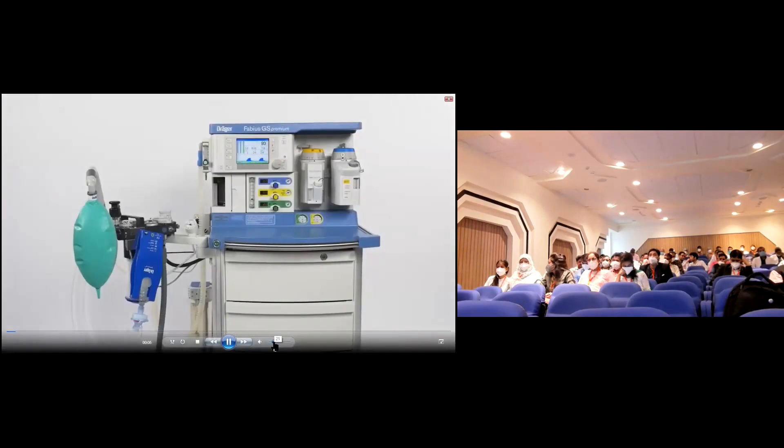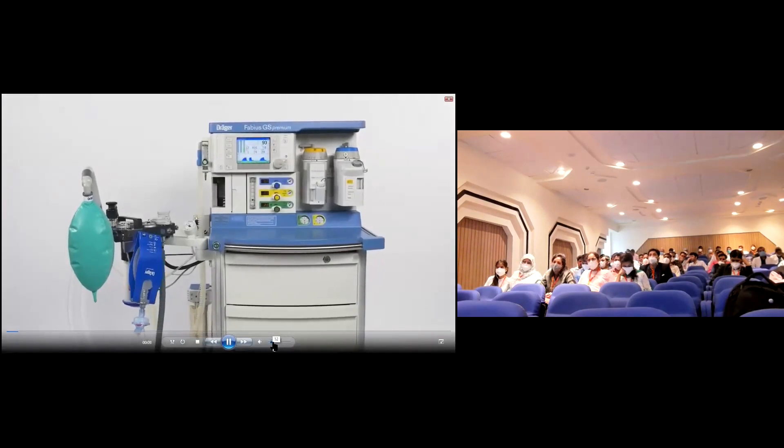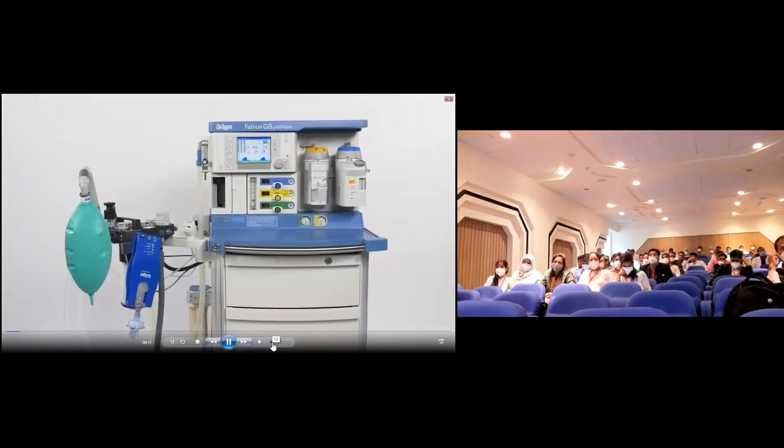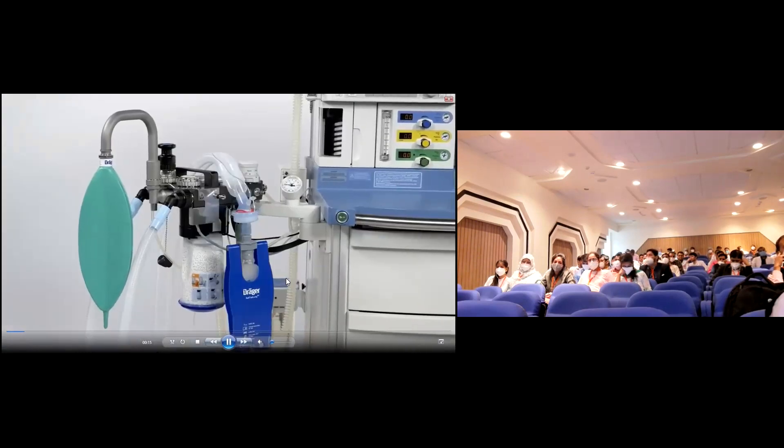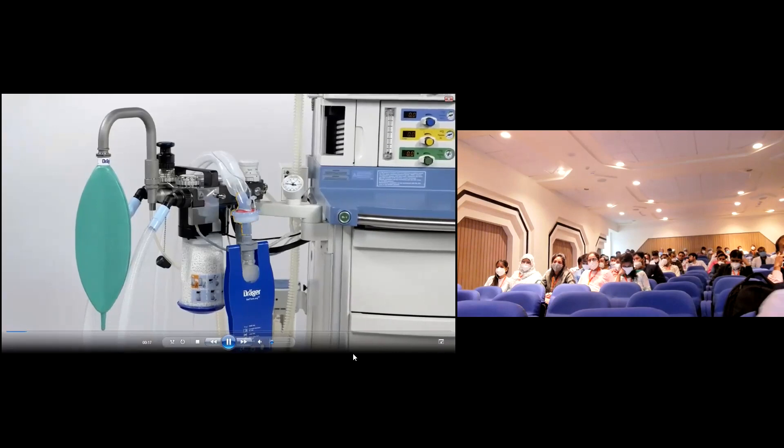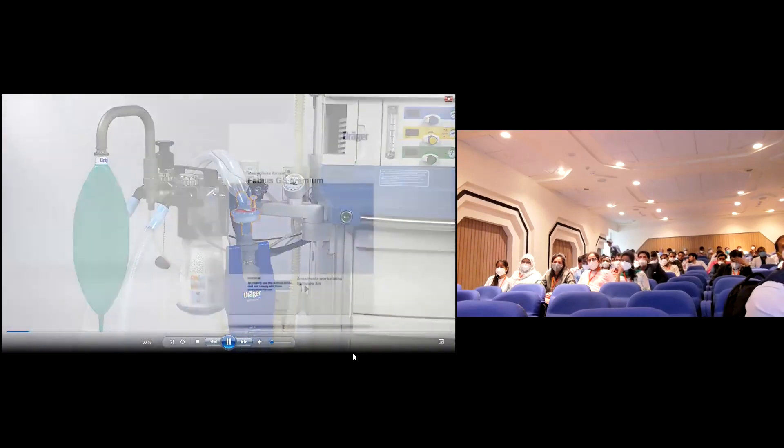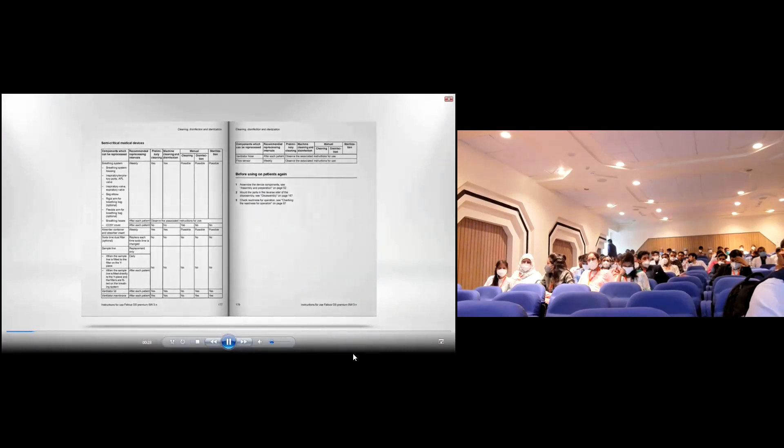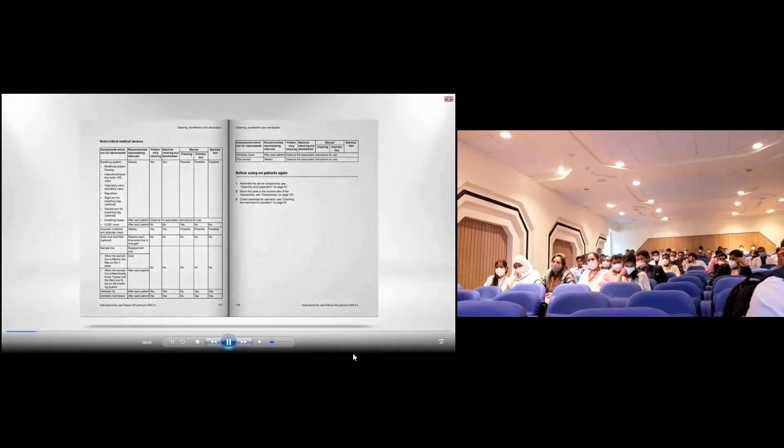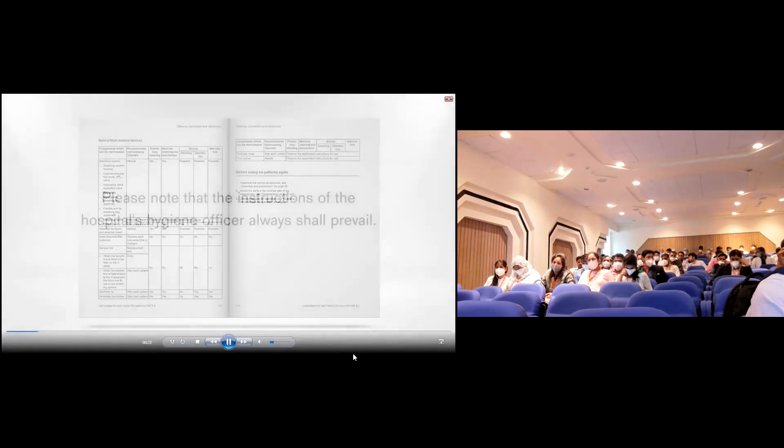In the following part, we would like to demonstrate how to reprocess components of the Fabius GS Premium which frequently need to be cleaned. Please note that any reprocessing intervals depend on the patients and on the use and position of filters. A table containing information on the frequency of cleaning depending on different filter setups can be found in the instructions for use of Fabius GS Premium.